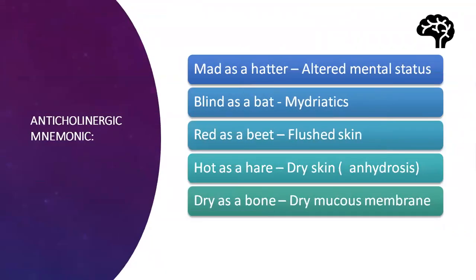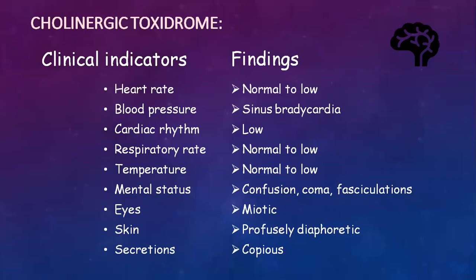Here is a beautiful mnemonic for anti-cholinergic toxidrome signs: 'Mad as a hatter' — altered mental status; 'Blind as a bat' — mydriatic, pupils will be dilated; 'Red as a beetroot' — the patient will have flushed skin; 'Hot as a hare' — the patient has dry skin and anhidrosis; 'Dry as a bone' — dry mucous membranes. Now moving to the cholinergic toxidrome.